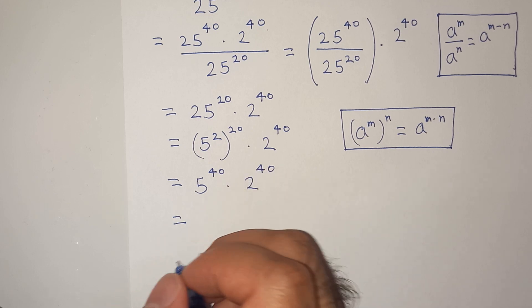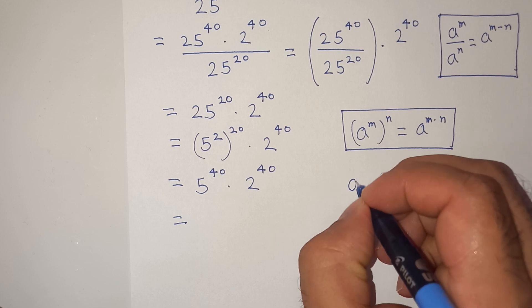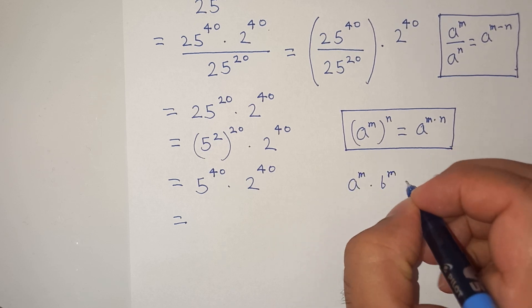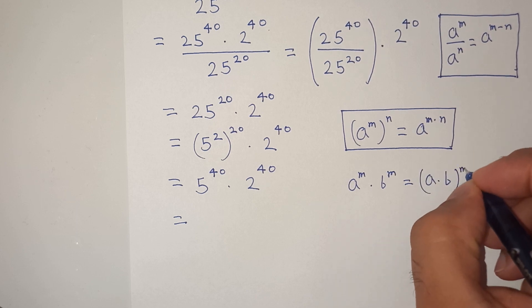So again we can see the exponents are common. So this is A power M multiplied by B power M can be written as A multiplied by B power M.